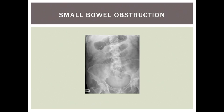Not all obstructions are as dramatic as the last example, but in this one you can see six loops of small bowel. You know this is small bowel as you can see the valvulae extending the whole way across the lumen. Again there is no air visible in the large bowel. This lady had an obstructed femoral hernia which was successfully managed surgically.